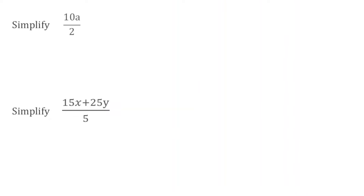Now let's look at some division questions. For the first one, we have simplify 10a divided by 2. We've got 10 lots of a and we're going to divide by 2. So we do 10 divided by 2, which is 5. That's going to leave us with 5 lots of a.